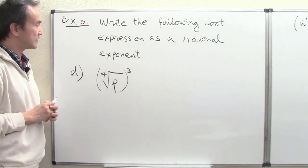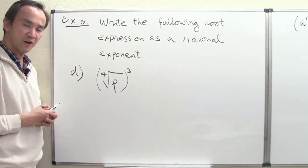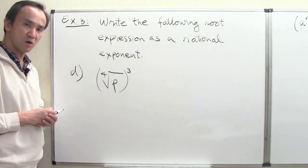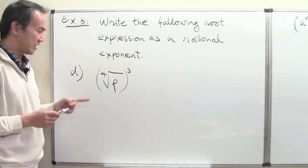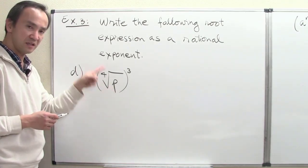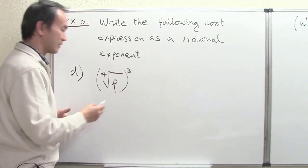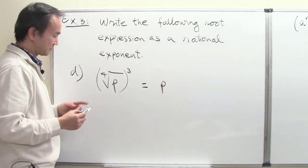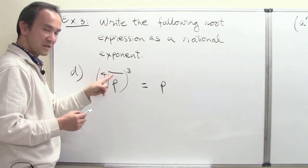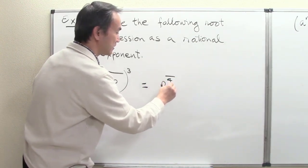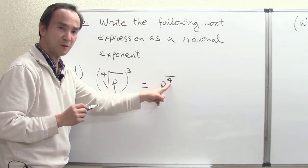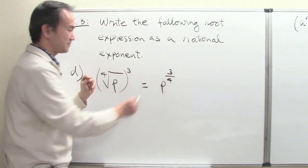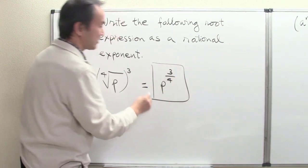Part D: the fourth root of p raised to the third power. We write the base p, the fourth root indicates the denominator of our rational exponent is 4, and in the numerator we put 3. So the answer is p to the 3 fourths power.